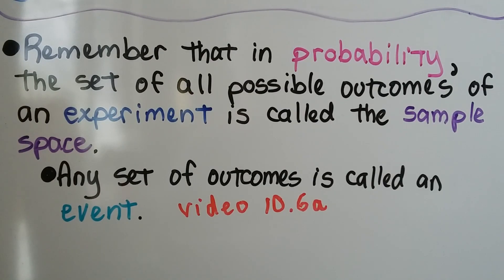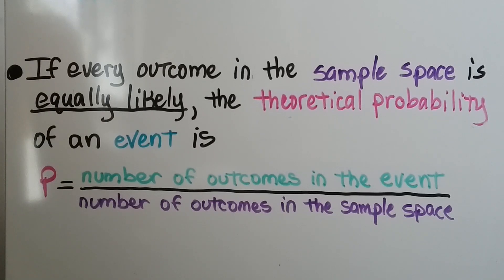Remember that in probability, the set of all possible outcomes of an experiment is called the sample space. Any set of outcomes is called an event. We covered that in the last video, 10.6a — you should also have covered that in middle school. If every outcome in the sample space is equally likely, the theoretical probability of an event P is equal to the quotient of the number of outcomes in the event and the number of outcomes in the sample space.